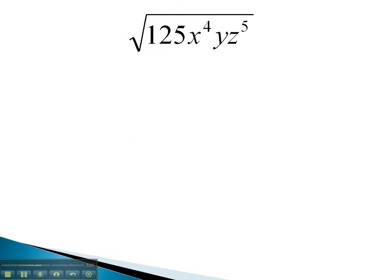In this problem, we have 125, which we need to find the prime factorization of. 125 is divisible by 5, 25 times, which is divisible by 5, 5 times, which is divisible by 5 once.